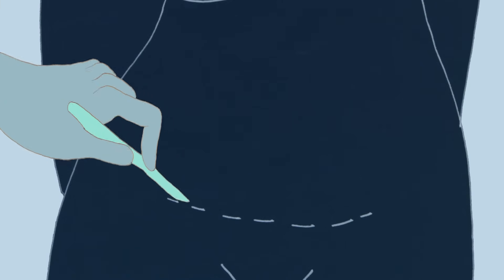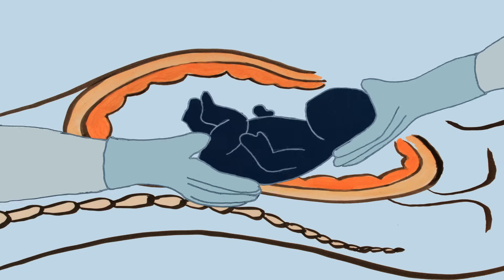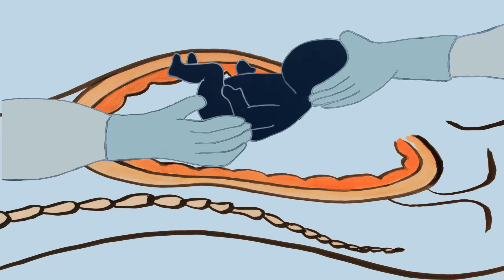They do this by opening the uterus and removing the baby that way. This is called a cesarean section, or a c-section for short.